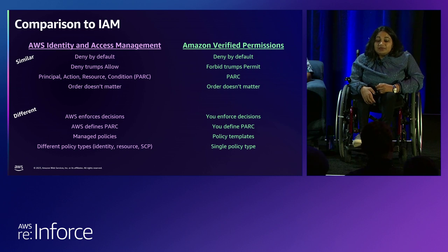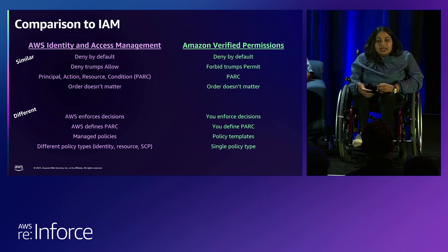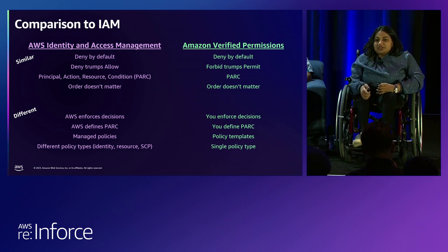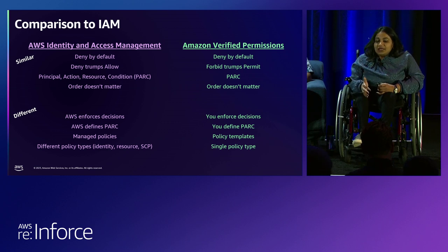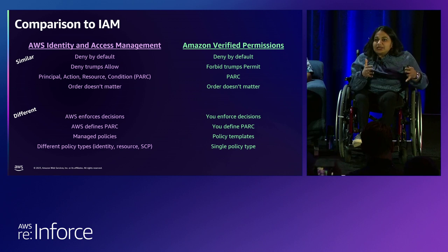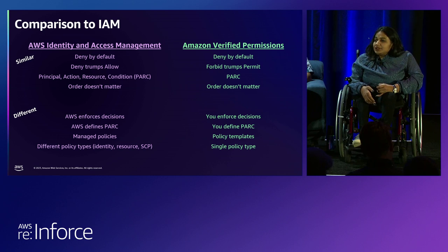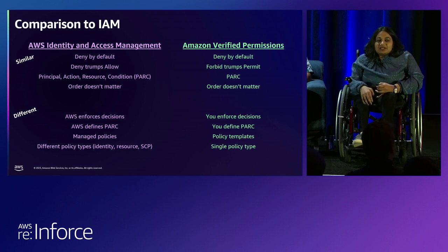Speaking of IAM, there are a lot of lessons we've learned there that we apply here. We have 10 years of running authorization at scale. IAM is serving a billion requests a second today, and that's the level of consistency, scalability, and security we want to provide for Verified Permissions. But there are a few important differences between IAM and Verified Permissions.